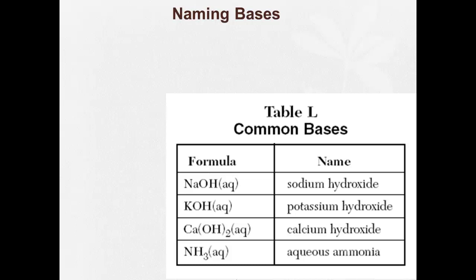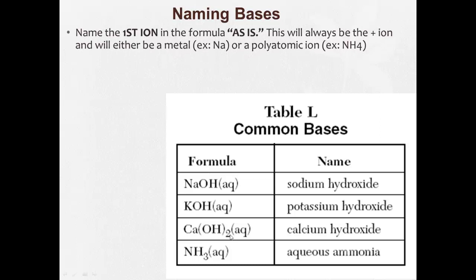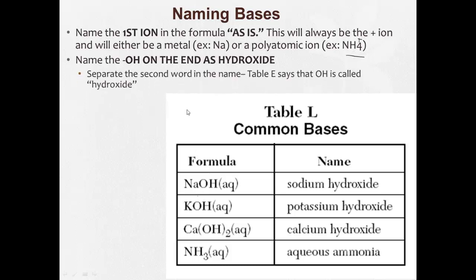Bases are significantly easier. We basically just follow the naming rules for ionic compounds that we learned earlier in the year. So the first ion in the formula, the metal stays as is, whether it's a metal or a positive polyatomic ion. And the OH we say hydroxide.